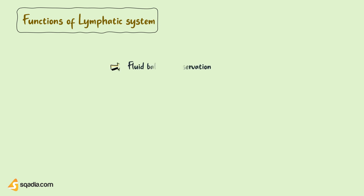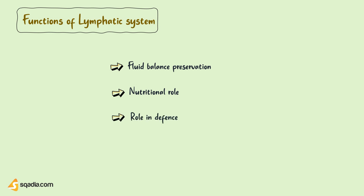But here, we will talk about some important functions of the lymphatic system first. The lymphatic system is known for its three main functions: fluid balance preservation, nutritional role, and role in defence.